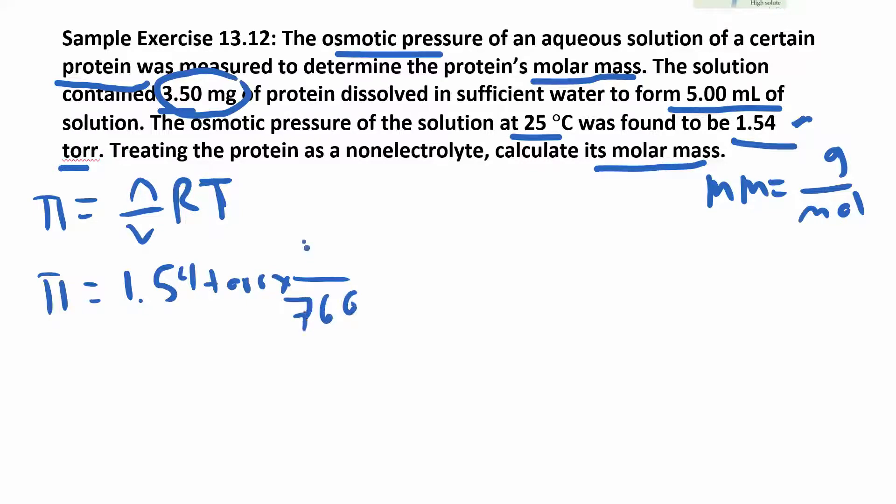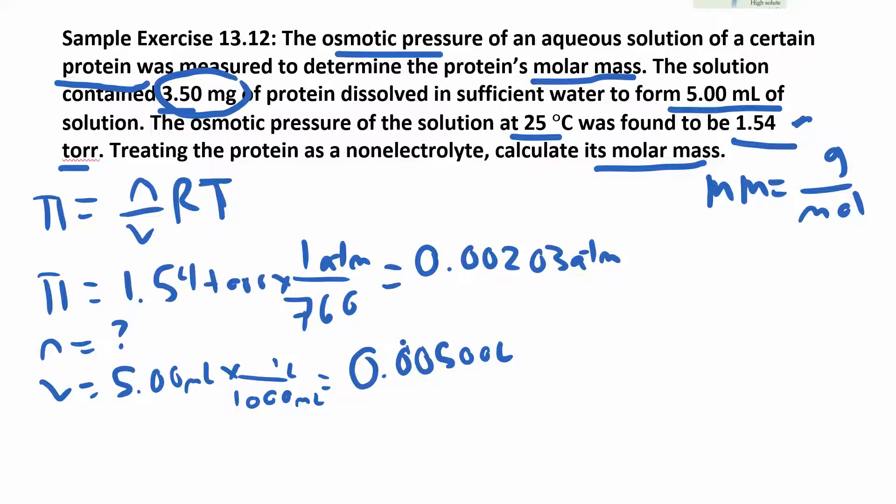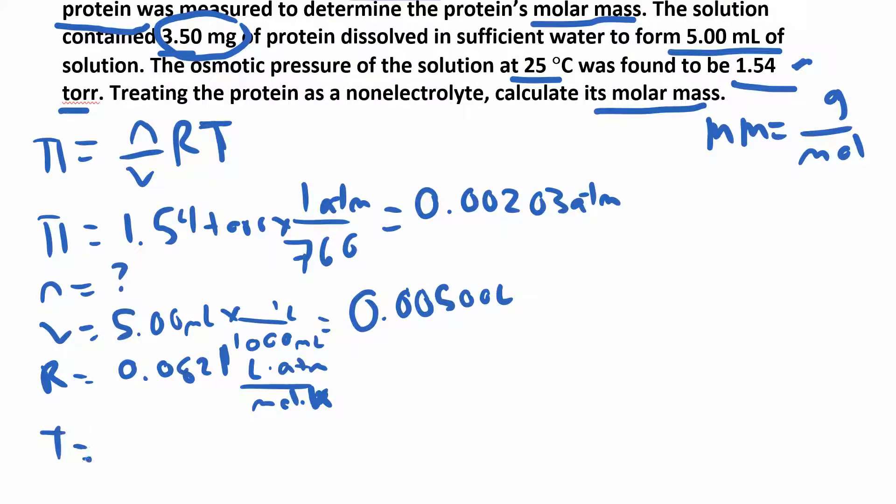They tell us π is 1.54 torr. Nobody likes torr, so let's convert to atm: 0.00203 atm. V is 5 milliliters, which we convert to liters: 0.00500 liters. R is 0.0821 liters atmospheres per mole kelvin. Temperature is 25°C plus 273, which is 298 kelvin.